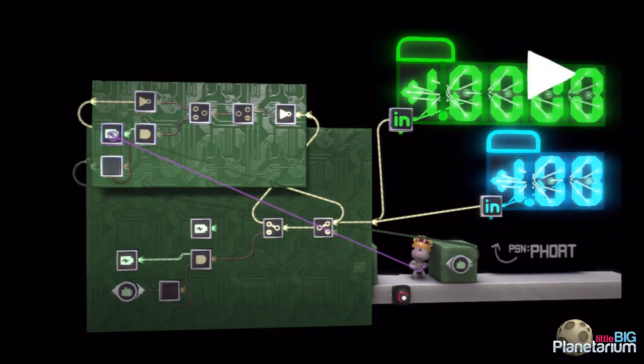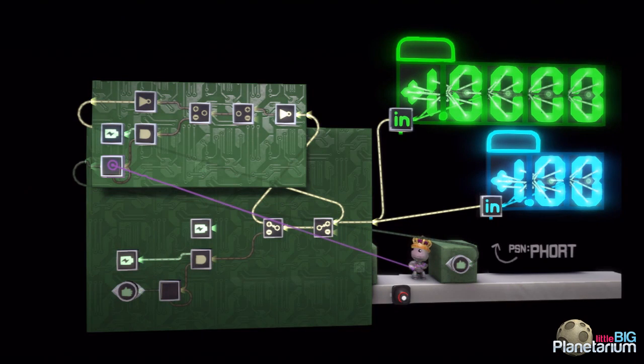So this here is our addition calculation. This here is deciding how much we're going to add up each time. And it's creating a pulse. Each time I grab it, it pulses once.